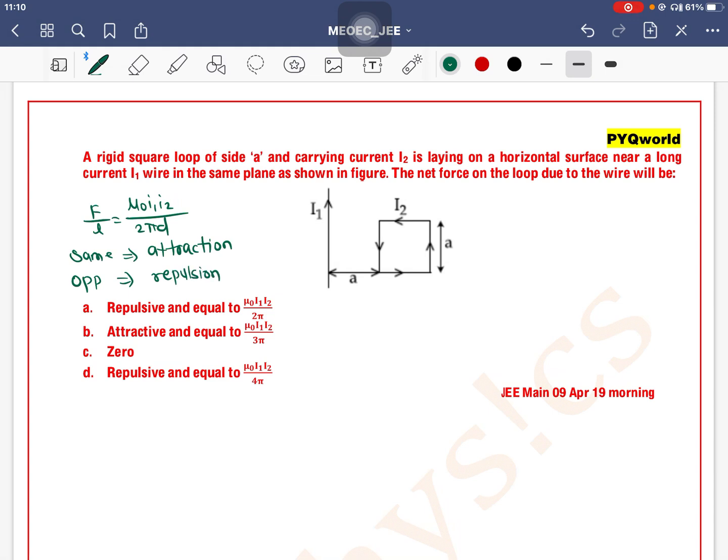Now look, this one is a fixed loop. We need to find the force on the loop. I have two parts - let's say part 1 is this and part 2 is this, because the horizontal parts experience force.